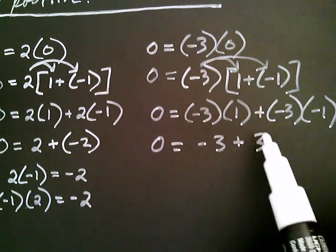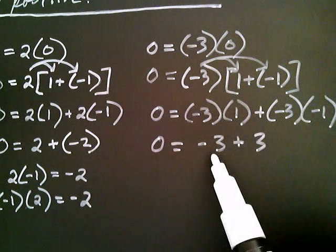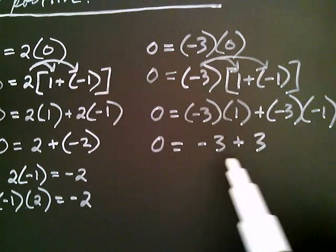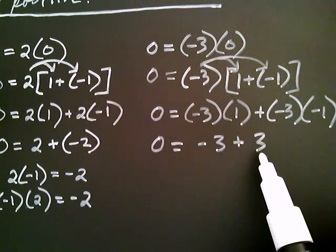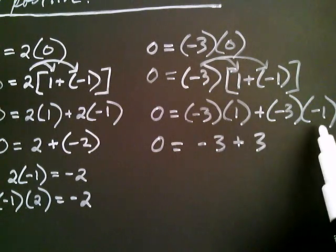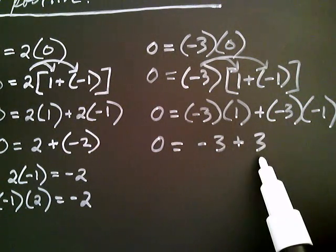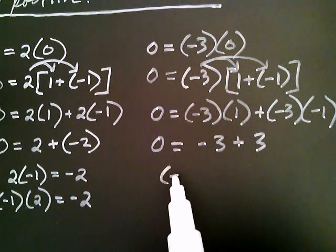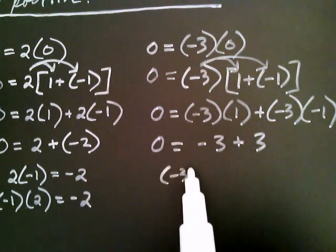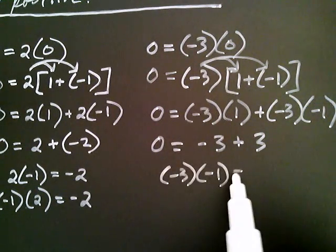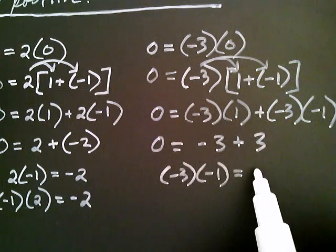Because we're adding this number to negative three, and the only thing you can add to negative three to get zero is positive three. So let's write down what we observed: negative three times negative one is equal to positive three.